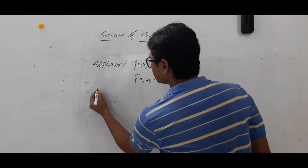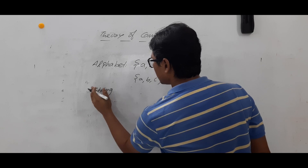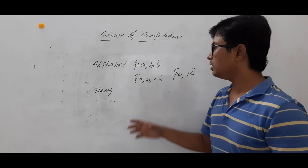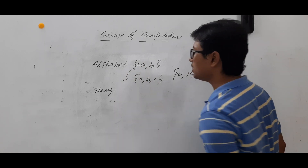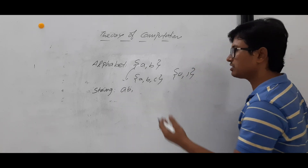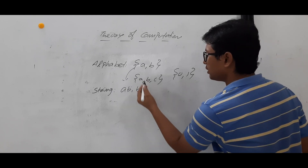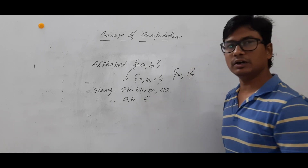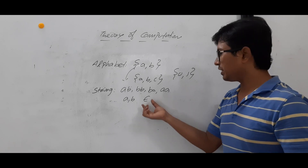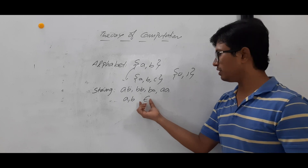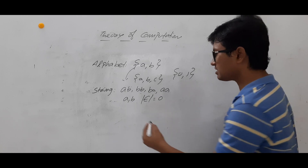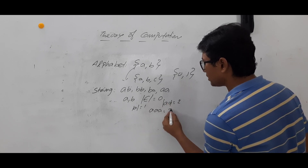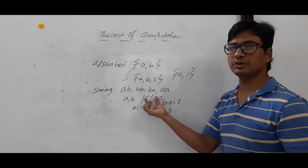Now we will discuss what is a string. A string is a word which can be generated from an alphabet. For example, with alphabet {a, b}, strings of length two are: ab, bb, ba, aa. Strings of length one are: a, b. A string of length zero is epsilon. Epsilon means the length of the string is zero — we call it an empty string. So the length of 'a' is one, 'aa' is two, 'aaa' is three, whereas epsilon has length zero.